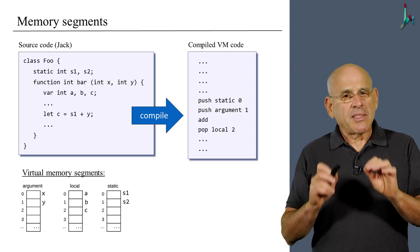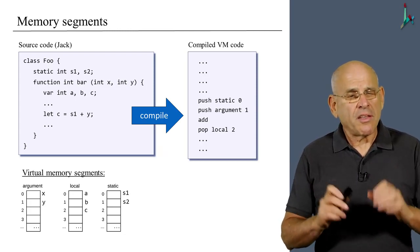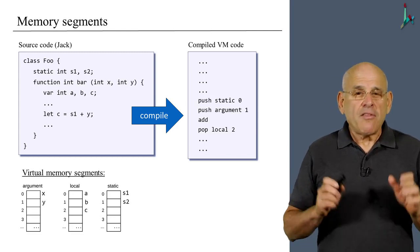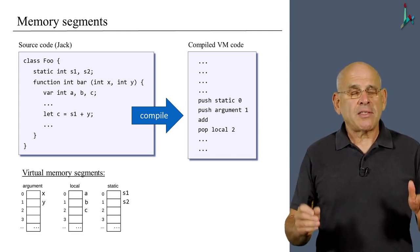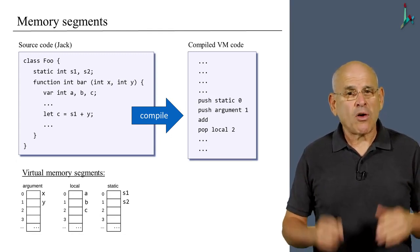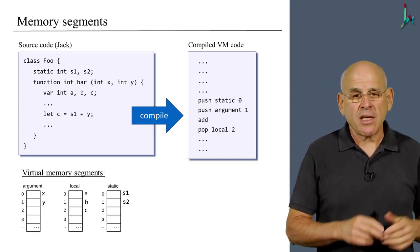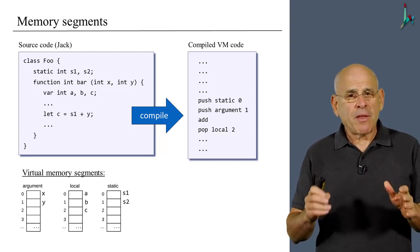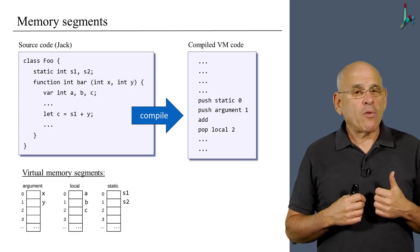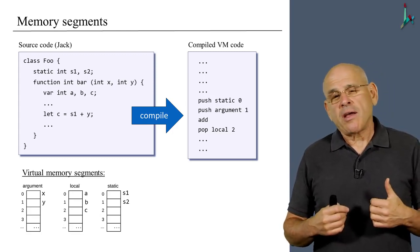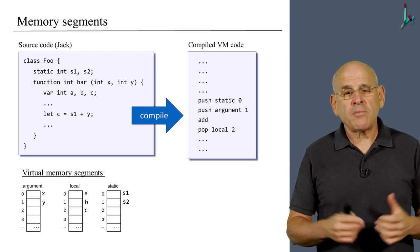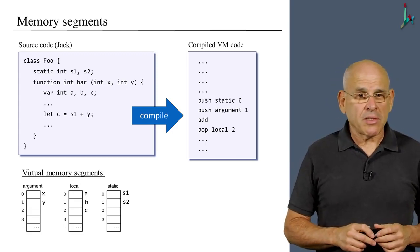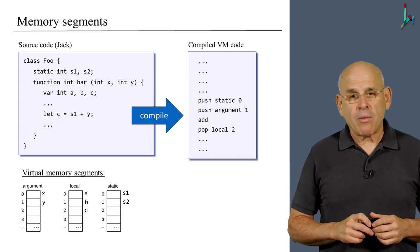Something interesting has happened: we lost the variable names in the process. The VM abstraction does not recognize symbolic variable names — all variables are replaced by references to memory segments, as we see here. This is not unique to our VM. Our VM, by the way, is modeled after the JVM, the Java Virtual Machine, in broad terms. The JVM also does not have symbolic variables; it only has references to memory segments.